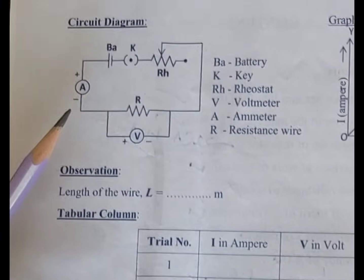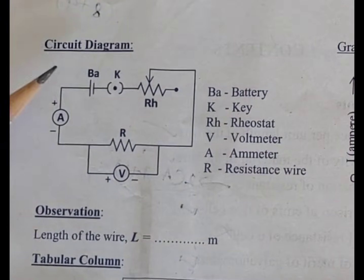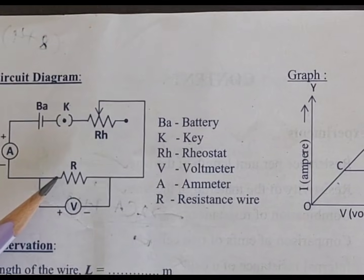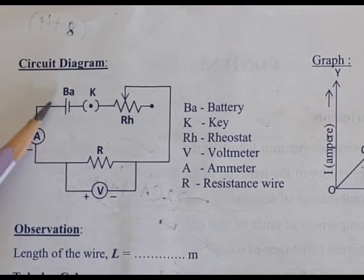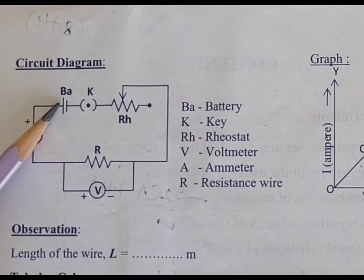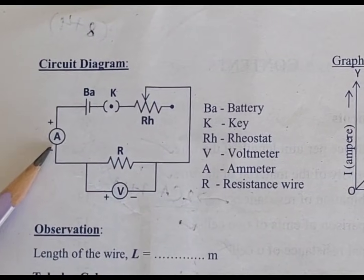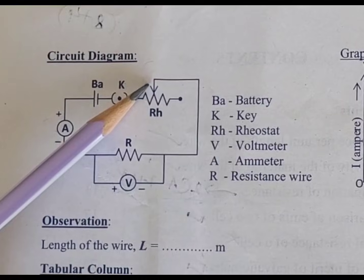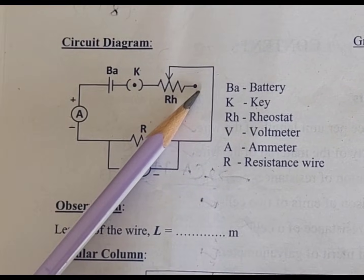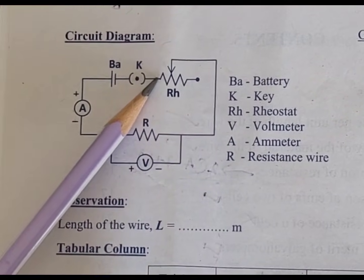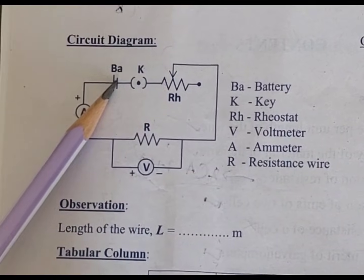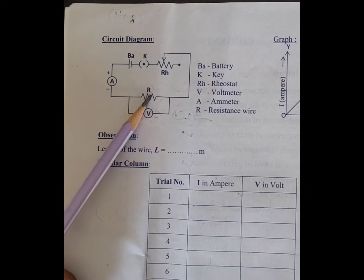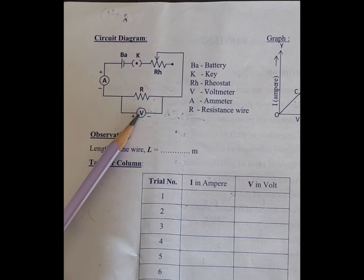Now let us observe the circuit diagram. We are using a battery, plug key, rheostat, ammeter, voltmeter, and unknown resistance wire. The connection goes from battery positive to ammeter positive, then ammeter negative to voltmeter positive, voltmeter negative to the upper end of the rheostat. One lower end is closed; leave it. The other lower end of the rheostat connects to the plug key, and plug key to battery negative. The resistance wire should be connected to the positive and negative ends of the voltmeter.